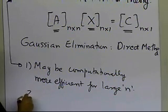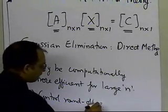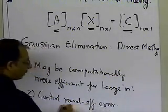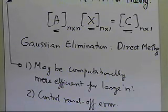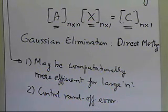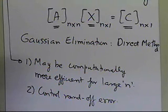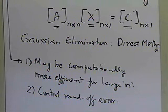The second reason is that you can control round-off error. In Gauss elimination, the only way to control round-off error is by choosing partial pivoting or by increasing the number of digits used to store your numbers — going from single precision to double precision or quad precision. But in Gauss-Seidel, because it's an iterative procedure, you can stop as soon as the absolute relative approximate error is less than some pre-specified tolerance. You don't have that luxury in Gauss elimination.